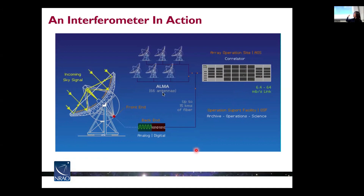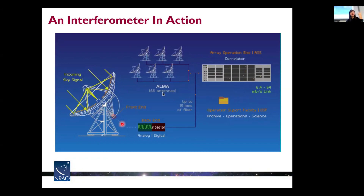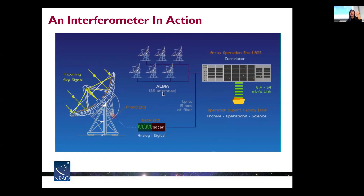Here is an animation showing the whole process starting from receiving the sky signal being reflected by the main dish, then focused by the secondary mirror, with all signals sent into the receiver. In the front end, the signal will be amplified and turned into digital signals. This is done for all antennas, and all these signals are sent to the correlator for multiplying and averaging, giving us the raw measurement from each baseline.